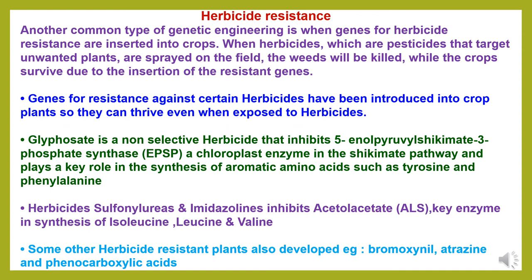Herbicide resistance technology. Another common type of genetic engineering is inserting genes for herbicide resistance into crops. When herbicides are sprayed on a field, the weeds will be killed while the crops will survive due to the insertion of the resistance gene against herbicides. Genes for resistance against certain herbicides have been introduced into crop plants so they can thrive even when exposed to herbicides. This herbicide resistance technology has been developed against herbicides like glyphosate, which is a non-selective herbicide, as well as sulfonylates, imidazolines, bromoxynil, atrazine and phenoxycarboxylic acid.